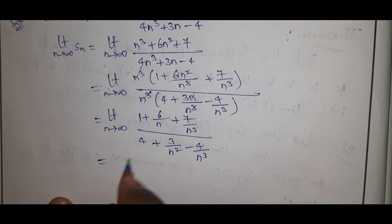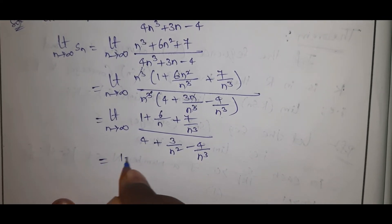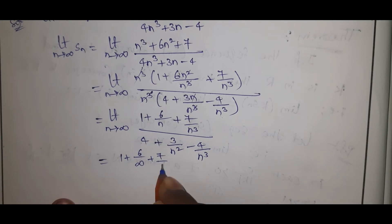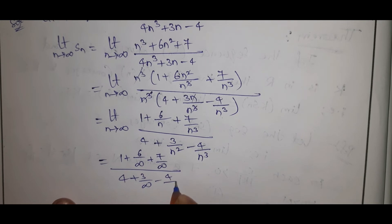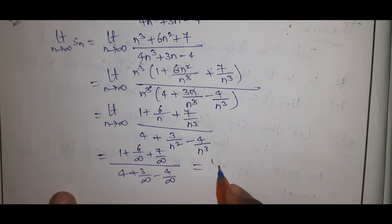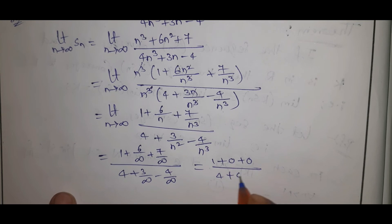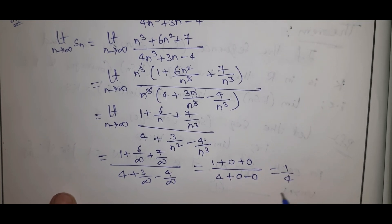Now as n tends to infinite, substituting we get 1 plus 0 plus 0 over 4 plus 0 minus 0. That equals 1 by 4.